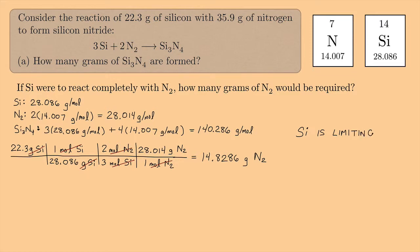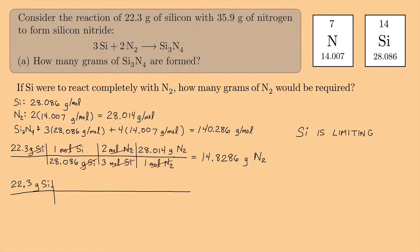Now I can go ahead and answer the question: how many grams of silicon nitride are formed? I'm going to use the 22.3 grams of silicon to determine that, because that's the limiting factor. If it had turned out that nitrogen was limiting, then I would have used the 35.9 grams to figure out how many grams of Si₃N₄ are formed. But in this case, I'm going to start with the 22.3 grams of silicon. This is just a regular stoichiometry problem. Since I have to convert from one substance to another, I need to first go from grams to moles.